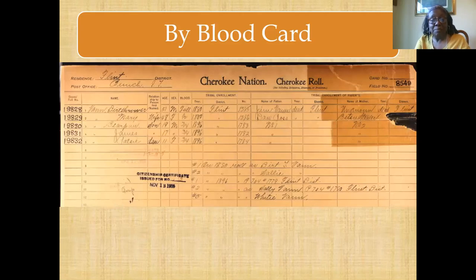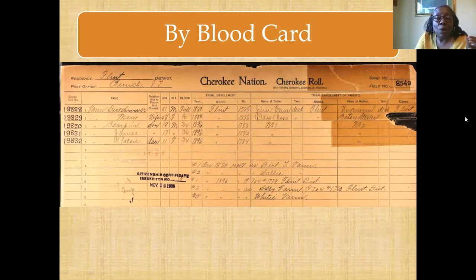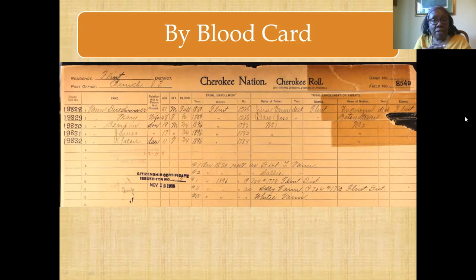You will often find people referring to an enrollment card. This is a typical card that reflects the various families. On the left, you see where people lived, their residence, and where their post office was. Over to the right, you see a card number or field card number. To the left, you see the names of people being enrolled, and to the left of their name, you see numbers — those numbers became their enrollment number. By blood cards were one-sided cards, but they contained a lot of information about the enrollee, including information about their parents — their father and their mother.